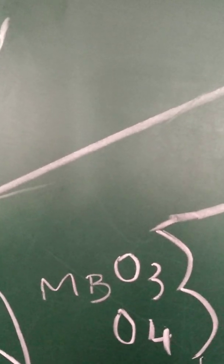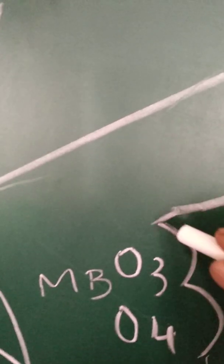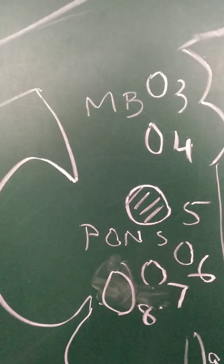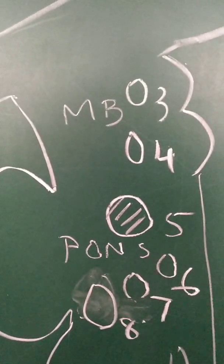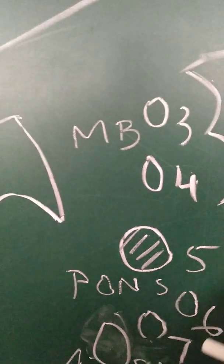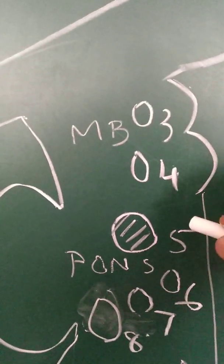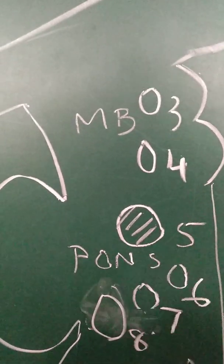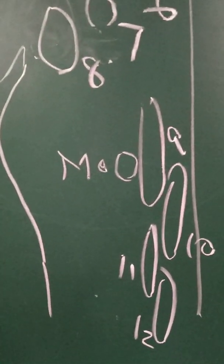The third and fourth cranial nerves — oculomotor and trochlear — are present in the upper midbrain and lower midbrain respectively. The fifth, sixth, seventh, and eighth cranial nerves are present in the pons. The fifth has a really large nucleus and is present in the upper pons, while the sixth, seventh, and eighth are present in the lower pons.